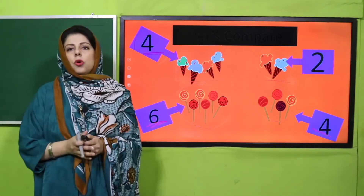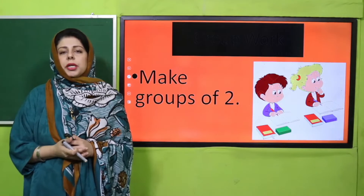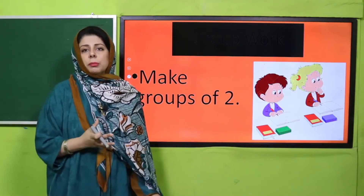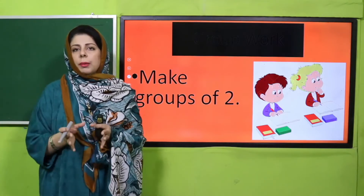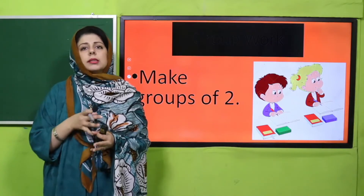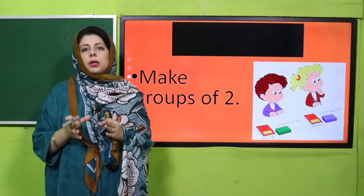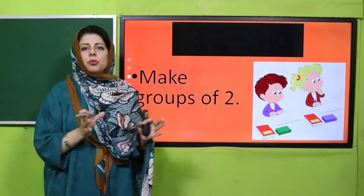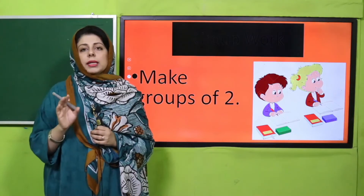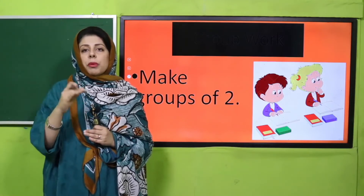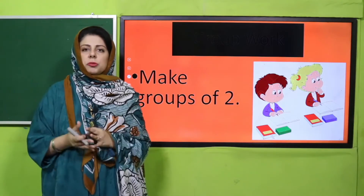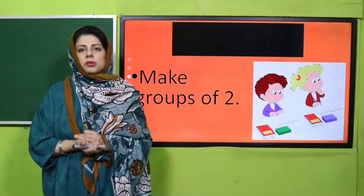آئیے اب ایک group activity کرتے ہیں۔ آپ نے اپنے friends کے ساتھ مل کے different numbers اور groups کے objects سامنے رکھنے ہیں — جیسے pencils، erasers، books — ان کو group کر لیجیے۔ پہلے more یا less کی context میں identify کریں، پھر count کریں one by one اور دیکھیں کہ group members میں کس کے پاس کونسی چیز زیادہ ہے اور اس کا کون سا number ہے۔ Teachers, please pause the video and give them five to seven minutes to discuss.